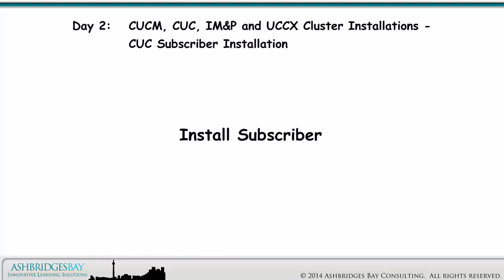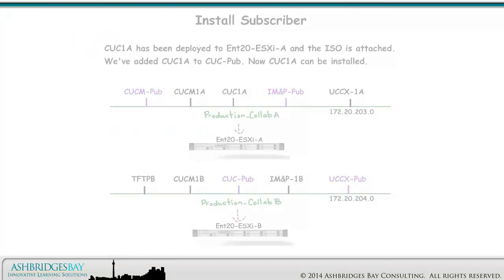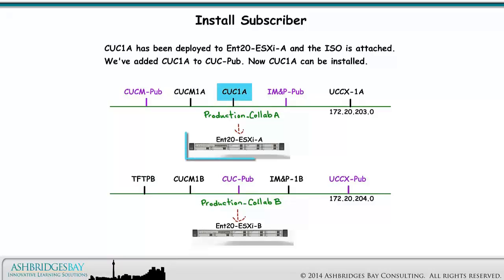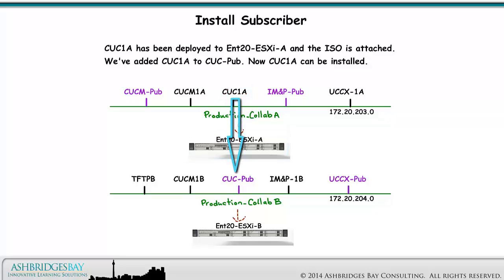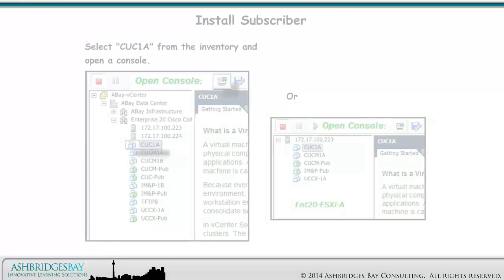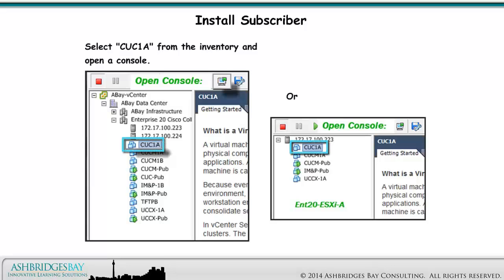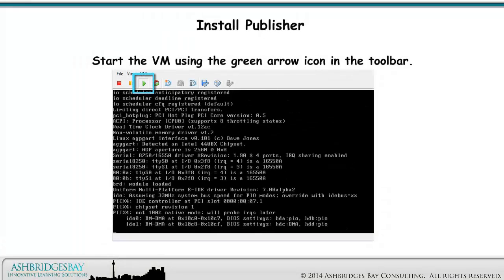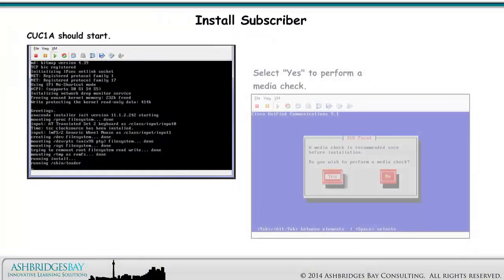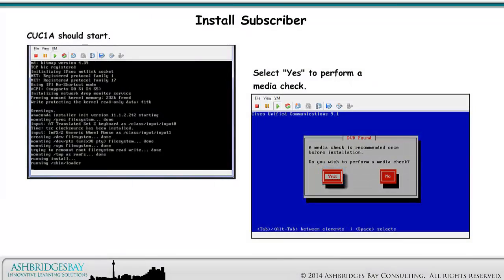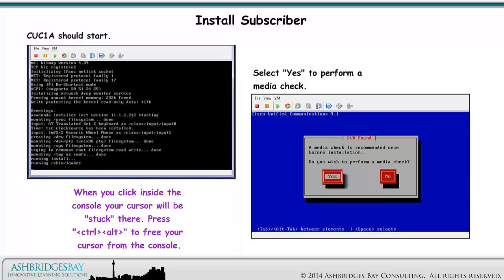Now we install the subscriber. CUC1A has been deployed to Enterprise 20 ESX-IA and the ISO is attached. We've added CUC1A to CUCPUB, so now CUC1A can be installed. Select CUC1A from the inventory and open the console. Start the VM using the green arrow icon in the toolbar. When CUC1A starts, select Yes to perform a media check. When you click inside the console, your cursor will be stuck there — press Control-Alt to free your cursor from the console.